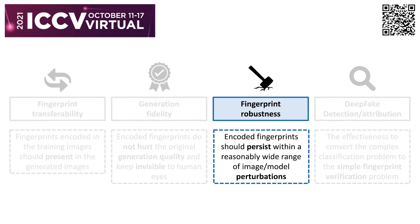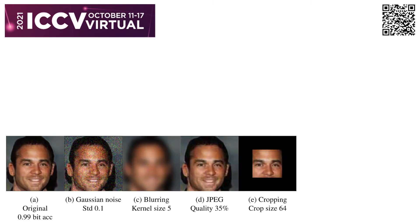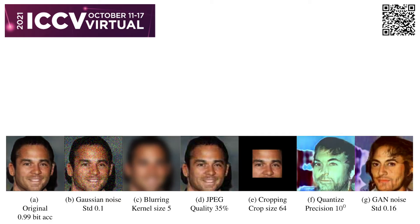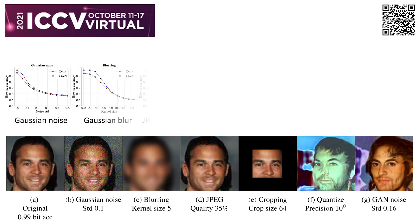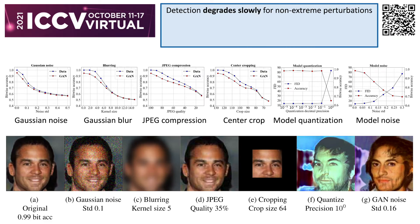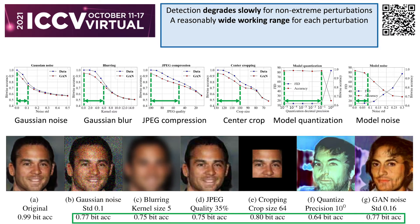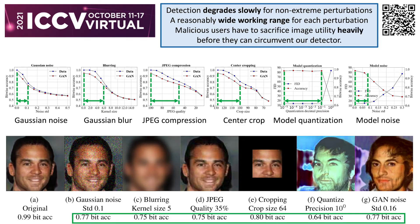For the evaluation of fingerprint robustness, we show fingerprint detection accuracy on perturbed images with respect to different amounts of perturbations, including four types of image perturbations — Gaussian noise, Gaussian blurring, JPEG compression, and central cropping — and two types of model perturbations — model quantization and model noise. For all perturbations, fingerprint detection accuracy drops as perturbation strengthens, but for non-extreme perturbations the drop is slow. Accepting 75% accuracy as the standard line results in a reasonably wide working range. Importantly, before accuracy degrades to 75%, image quality has already visually degraded to a non-acceptable level, meaning malicious users must heavily sacrifice image utility before circumventing our fingerprint detector.